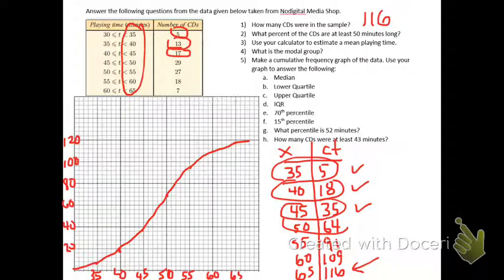What percent of the CDs are at least 50 minutes long? You can use your table. At least 50 means 50 or more, so that's 27 plus 18 plus 7, so 52.